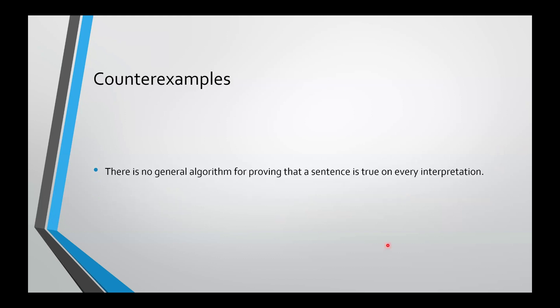PL isn't decidable, so there's no general algorithm for establishing that a sentence is true on every interpretation or false on every interpretation. The textbook does talk about using informal reasoning to reach the conclusion that a sentence has to be true or false on every interpretation, but this sort of reasoning isn't 100% reliable.